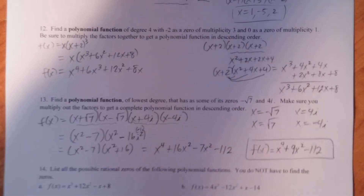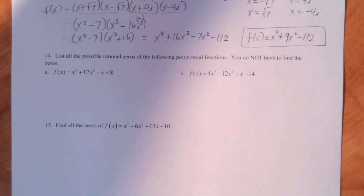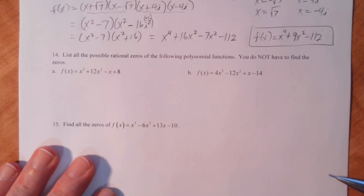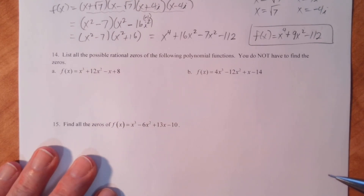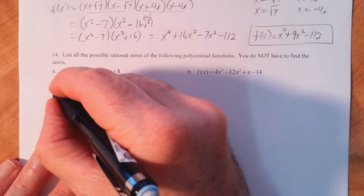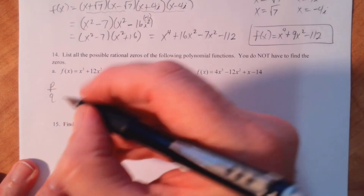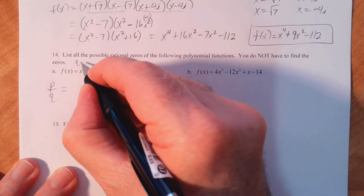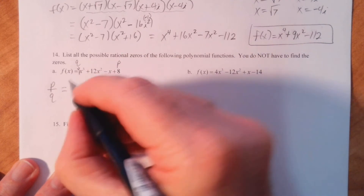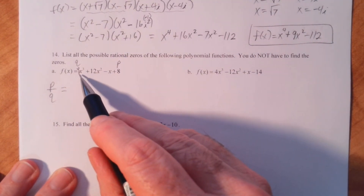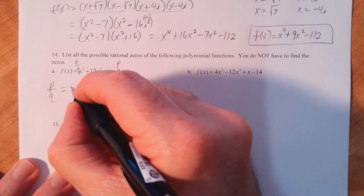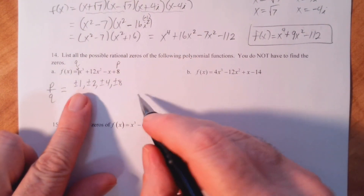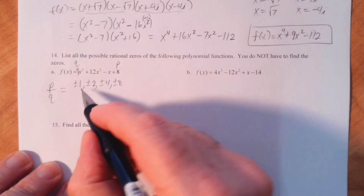Let's go down to number 14. It says list all the possible rational zeros of the following polynomial functions. For part a, we have f of x equals x cubed plus 12x squared minus x plus 8. Remember, any rational zeros by the rational zeros theorem will be of the form p over q, where the p's are factors of 8 — the constant term — and our q's are the factors of the leading coefficient, which is 1 here. Our factors of 8 are plus or minus 1, plus or minus 2, plus or minus 4, and plus or minus 8. Remember, they pair up: 1 times 8, 2 times 4.